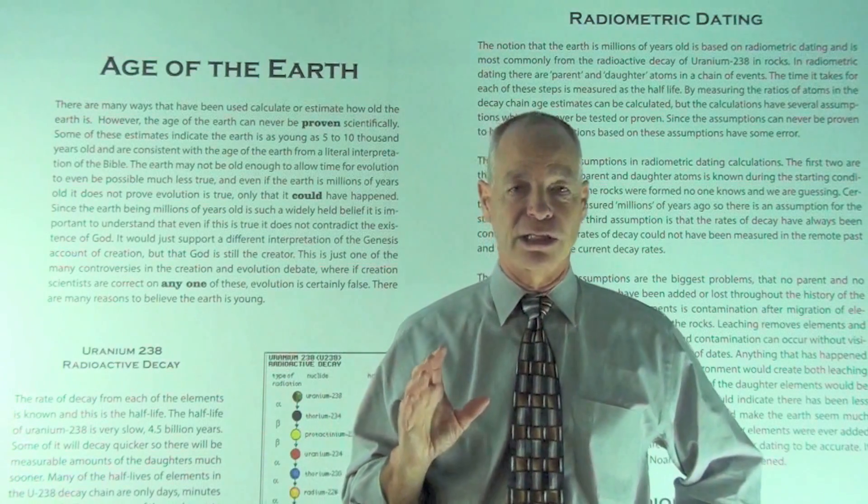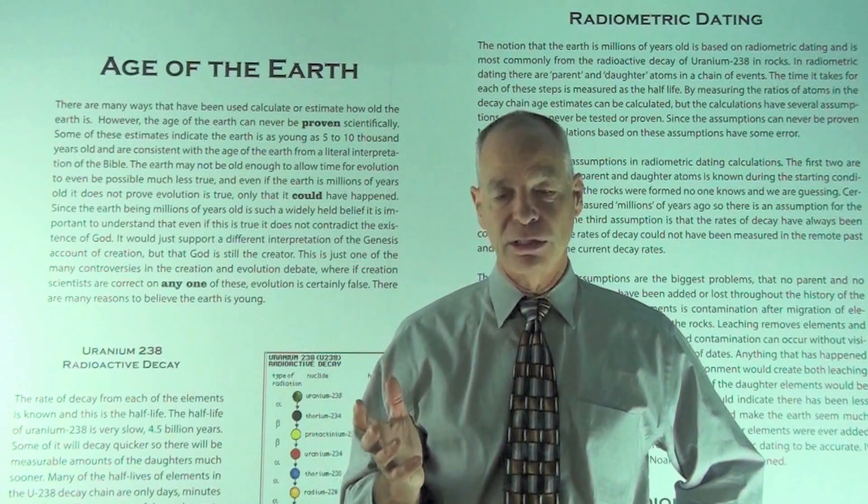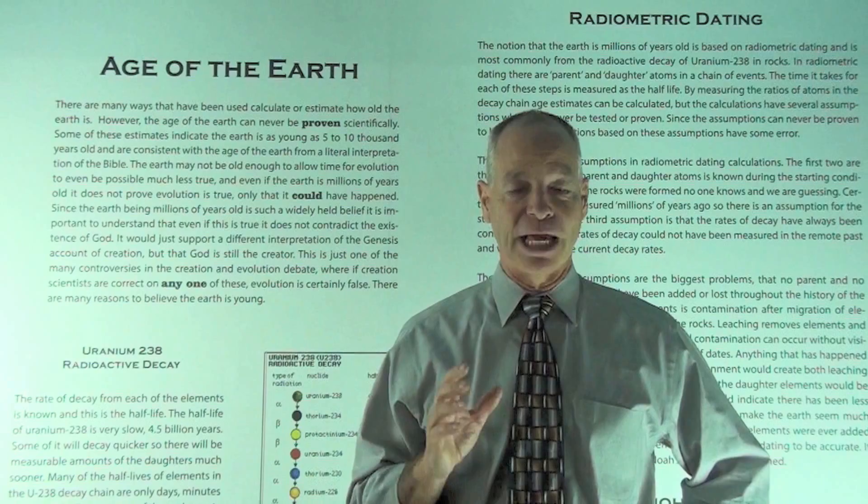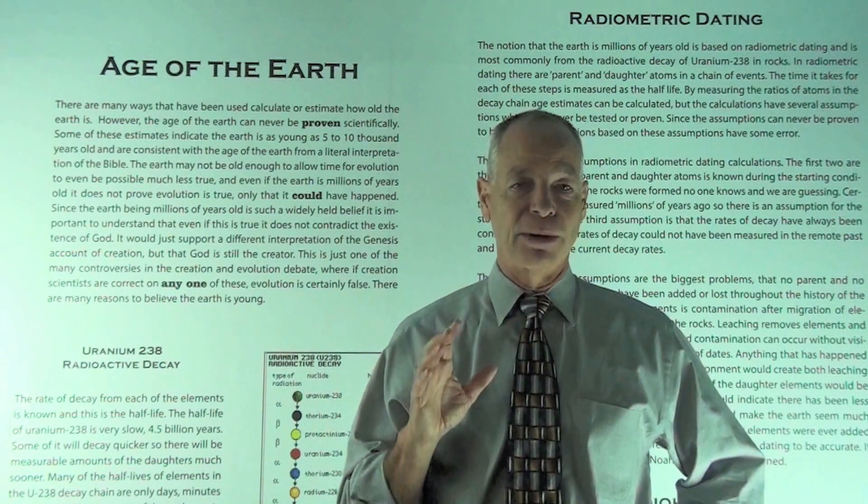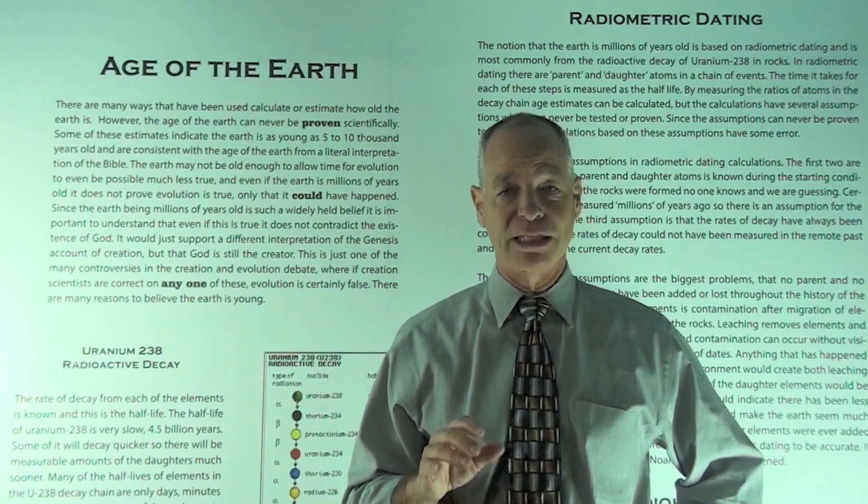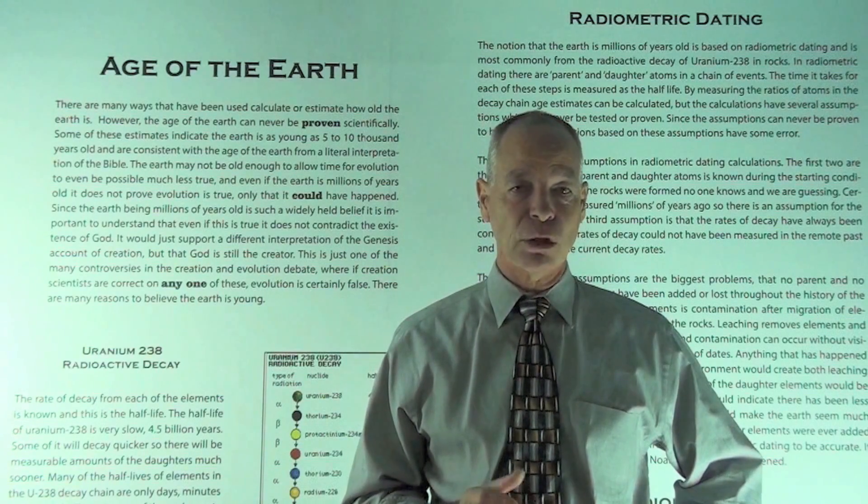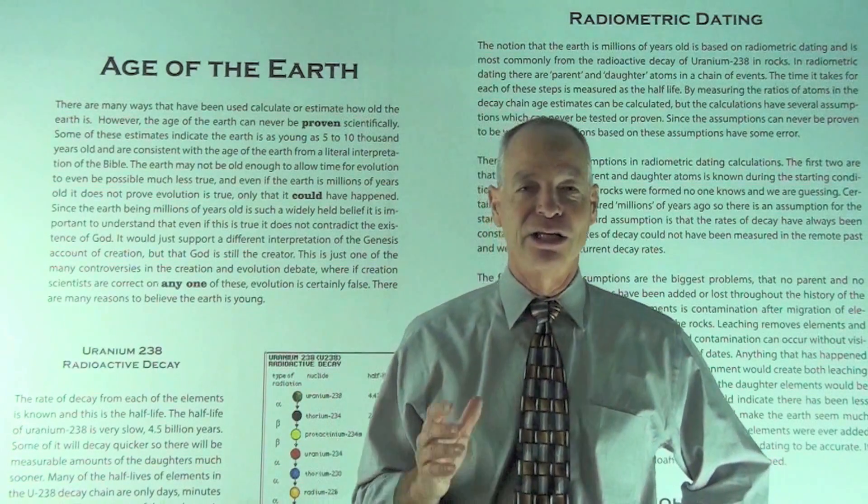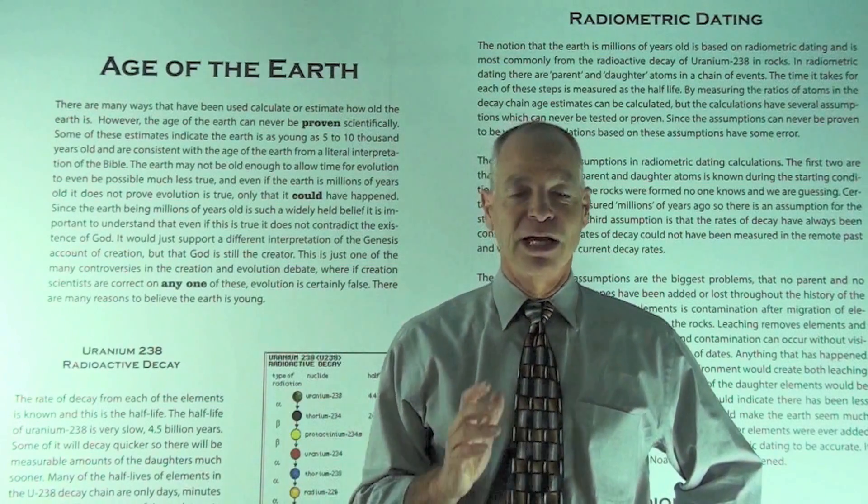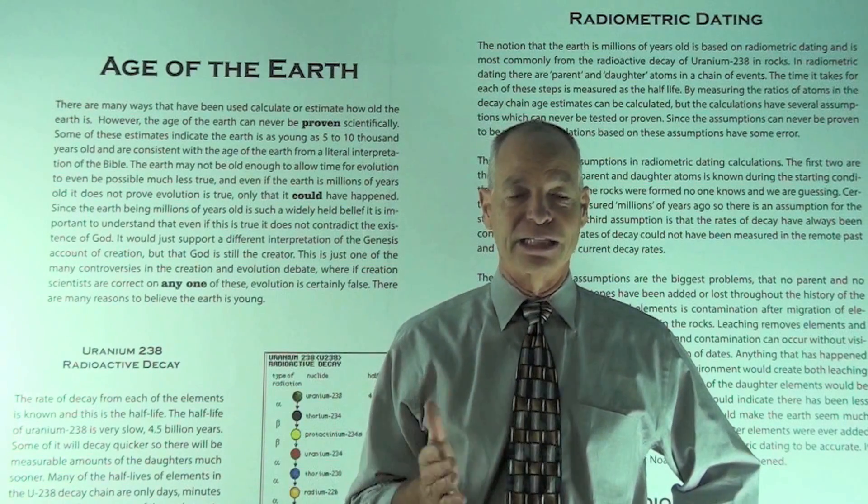So some of these is that the amount of the parent and the daughter atoms at the time that the rocks, the pre-Cambrian granites of the Earth, that the amount of the parent and daughter atoms was known at the times the rocks were formed. Well, there's no way to know that because nobody was there to measure that. So there's no way to know. So they're basically guessing and it's an assumption.